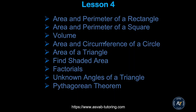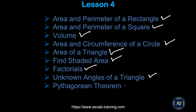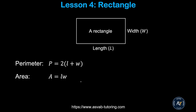In this lesson we'll learn how to find area and perimeter of a rectangle, area and perimeter of a square, volume, area and circumference of a circle, area of a triangle, shaded area, factorials, unknown angle of a triangle, and the Pythagorean theorem. First we'll learn how to find the perimeter of a rectangle.